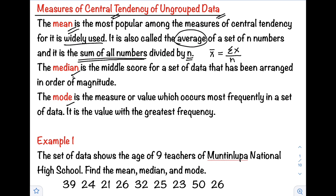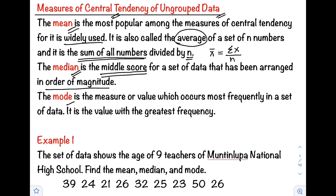Next, we have the median. It is the middle score for a set of data that has been arranged in order of magnitude. The data needs to be arranged in ascending or descending order before we can locate the median. To get the location of our median, we use the formula (n + 1) / 2.